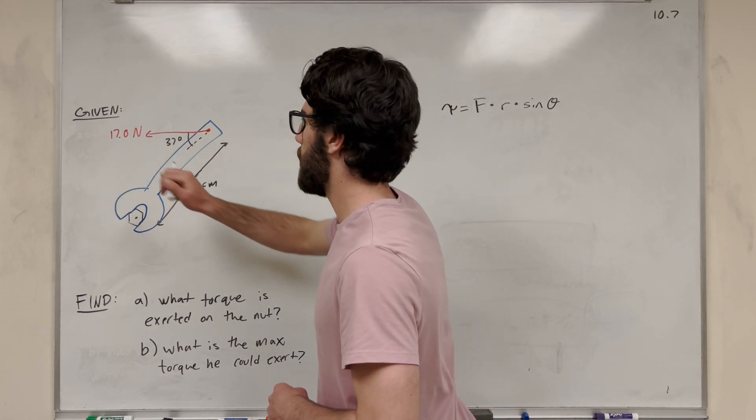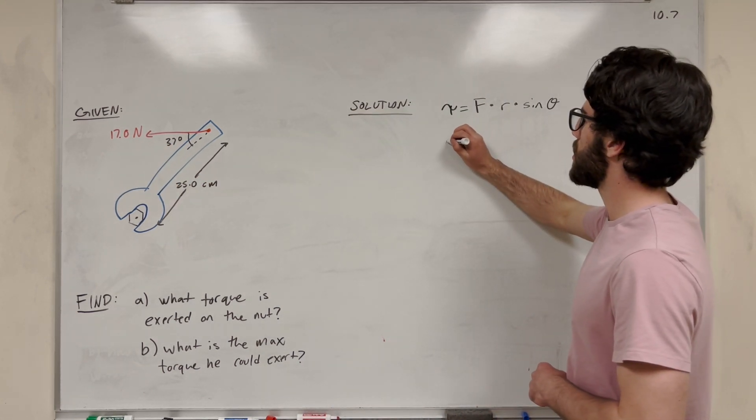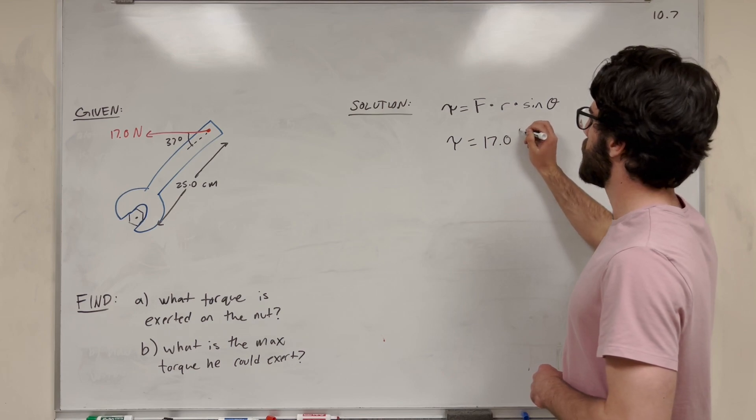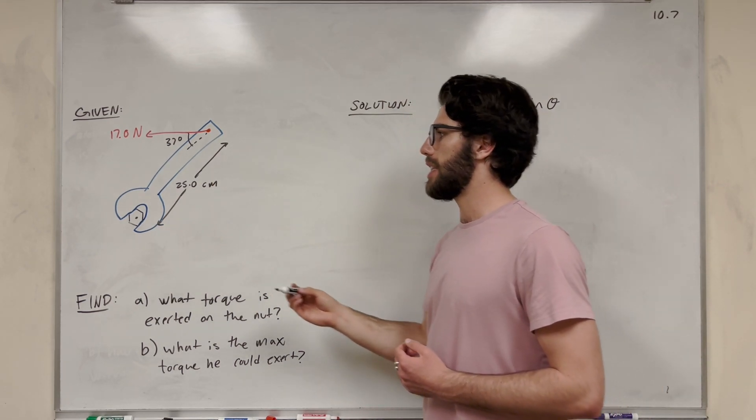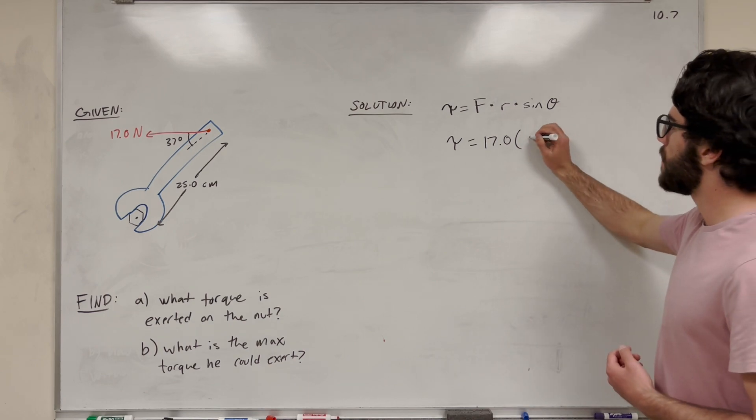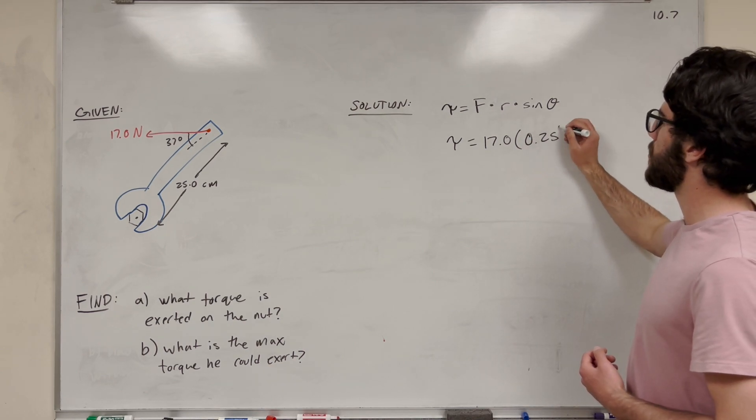So what's our force going to be? Well, we have that 17 newton force, so we have 17 newtons. What's the distance? Well, the distance from the force to the nut is 25 centimeters, so converted to meters is 0.25 meters.